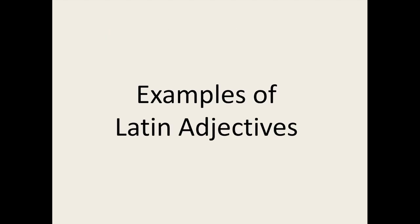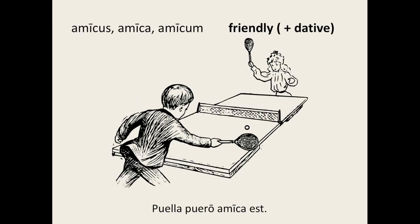Now let's learn some Latin adjectives. Amicus, which means friendly, welcoming, amicable, or pleasing. You will typically see it used together with a noun in the dative. This indicates to whom the subject of the verb is friendly. For example: puella puero amica est — the girl is friendly to the boy.